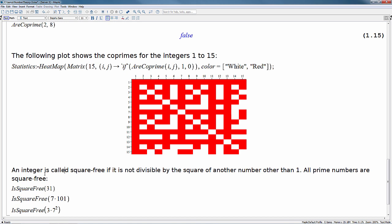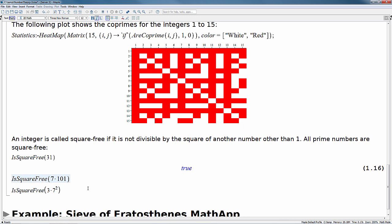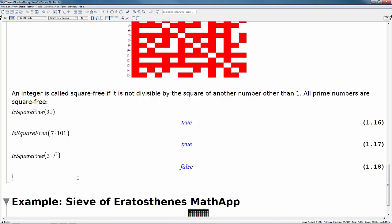Alright, so moving on. An integer is called square-free if it's not divisible by the square of another number other than 1. So all prime numbers are square-free. So is square-free 31 is true. Is square-free of 2 primes multiplied together, so 7 times 101 is true. And is square-free of 3 times 7 squared is false. Because we have this 7 squared so this is obviously not square-free.